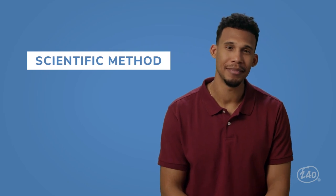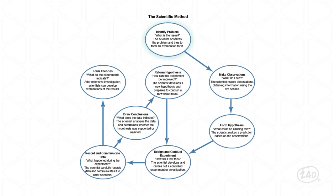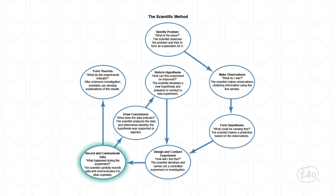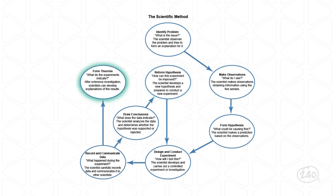That list of skills is just the scientific method. Here's a flowchart from our study guide that breaks it down: students start by identifying a problem, then make observations about the problem, form a hypothesis, design and construct an experiment, record the data during the experiment, and finally draw conclusions. Often, scientists will use their conclusions to modify their hypothesis and design a whole new experiment.